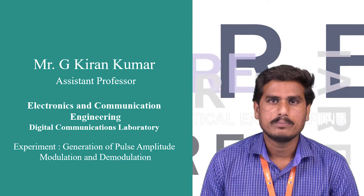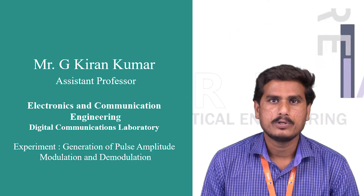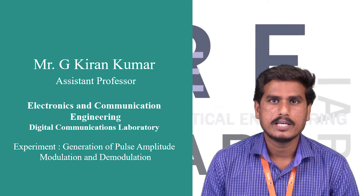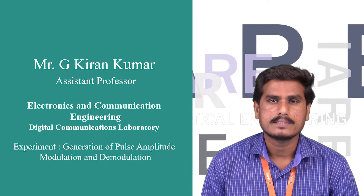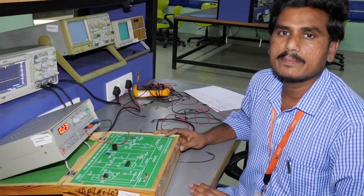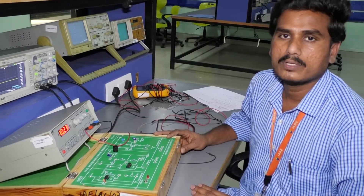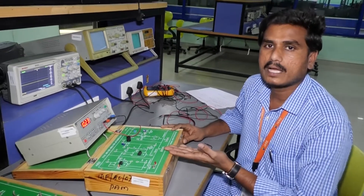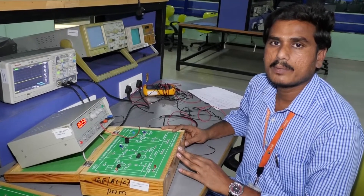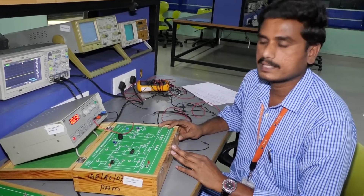How to change the amplitude of the pulse with respect to the input message signal? Let us see the circuit diagram of the pulse amplitude modulation and demodulation. It similarly looks like a sampling output. Now let us see what are the basic circuits and connections in the pulse amplitude modulation circuit.